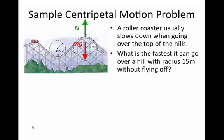When the roller coaster is at the top of the hill there are two forces acting on it. There is the normal force which points straight up from the track holding the roller coaster up and there is gravity pointing straight down.